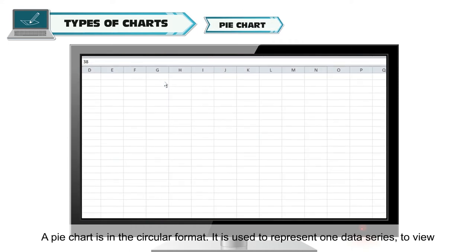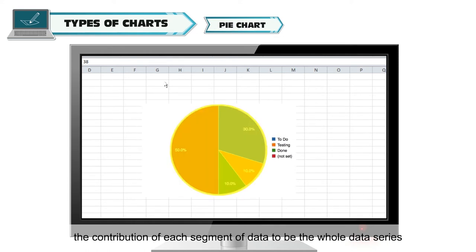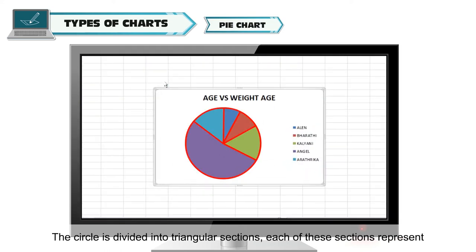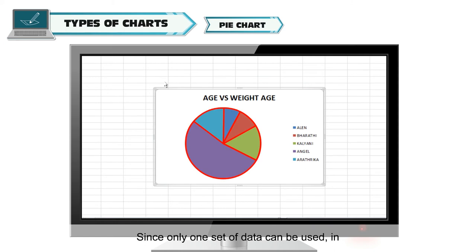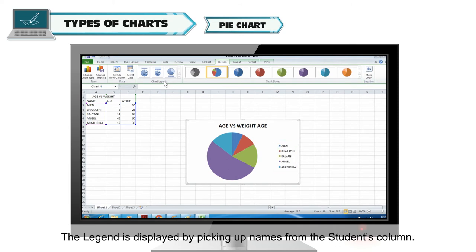Pie chart: A pie chart is in circular format and is used to represent one data series to view the contribution of each segment of data to the whole data series. A pie chart can only be drawn for one set of data series. The circle is divided into triangular sections, each representing quantities as a percentage that adds up to 100. In our example, age is plotted in the pie chart and the legend displays names from the students column.